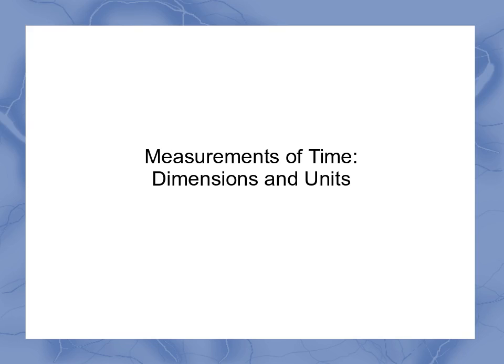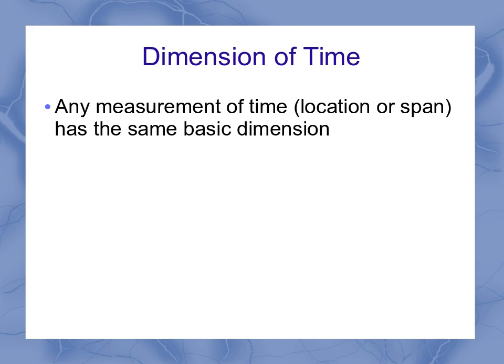Measurements of time, we're going to look at the dimensions and the units of that. Now dimension of time just represents any type of measurement of any physical property that we're talking about the time. It could be a location. It could be a span. It's got the same basic dimension for both of those.